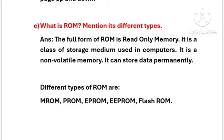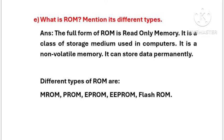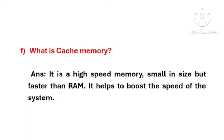Different types of ROM are: Masked Read-Only Memory, Programmable Read-Only Memory, Erasable and Programmable Read-Only Memory, Electrically Erasable and Programmable Read-Only Memory, and Flash ROM. Cache memory is a high-speed memory, small in size but faster than RAM. It helps to boost the speed of the system.